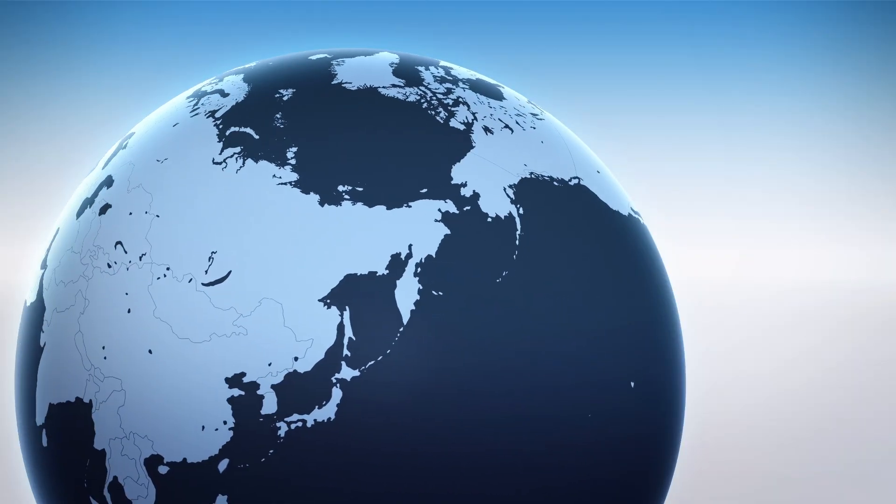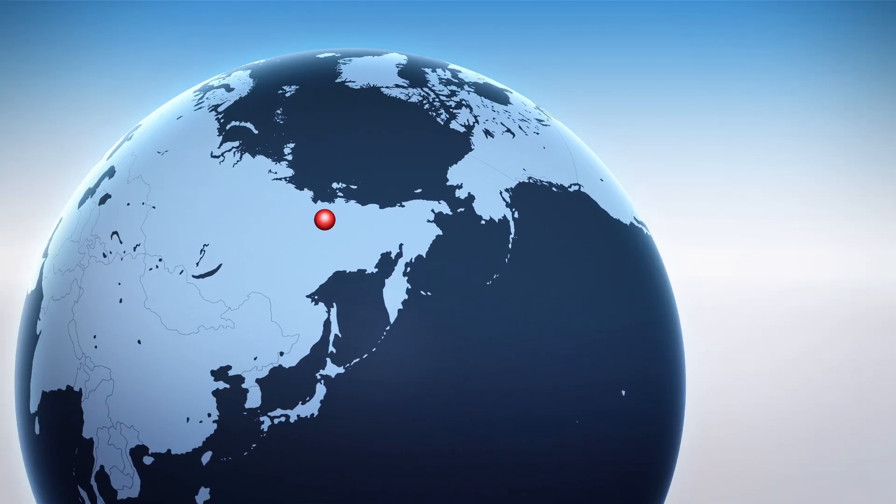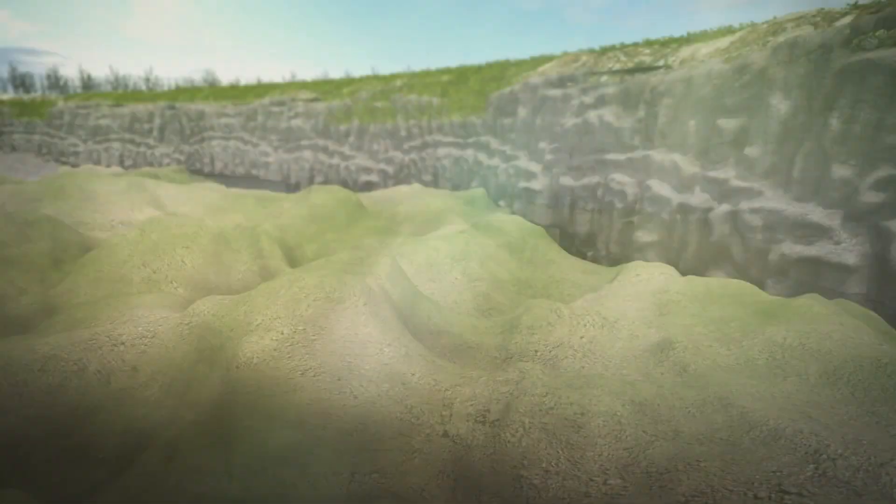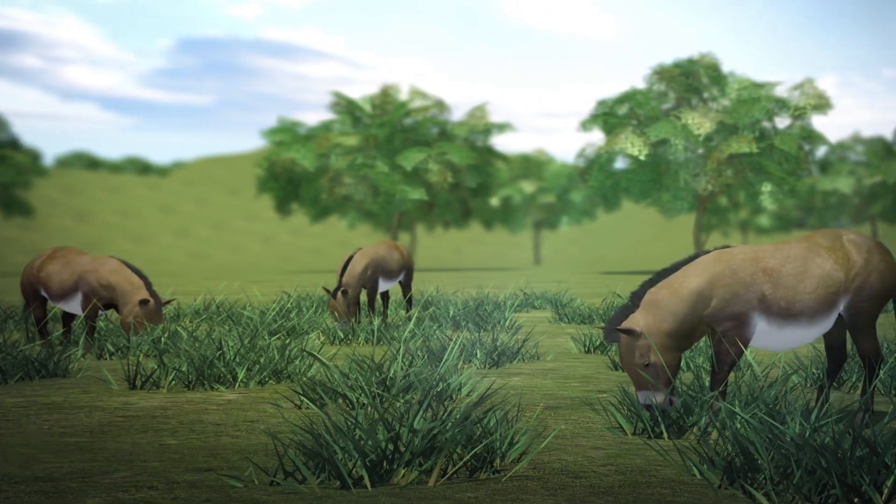The foal's body was found in the permafrost of a Siberian crater called Batagaika in Yakutia, Russia. It was found to be part of the Lenskaya breed, which went extinct about 4,000 years ago.